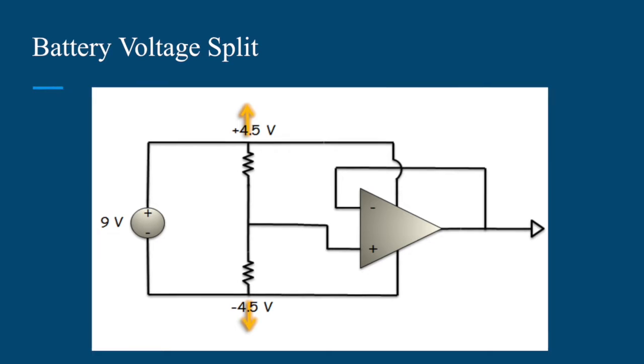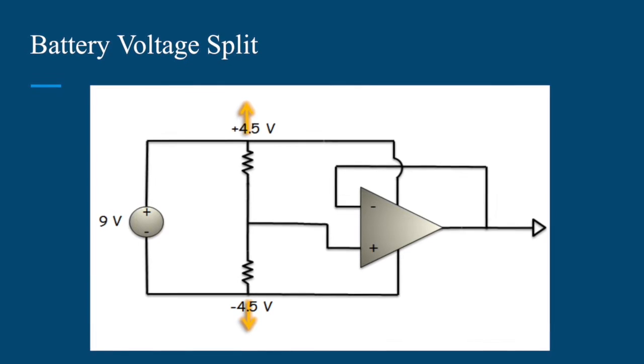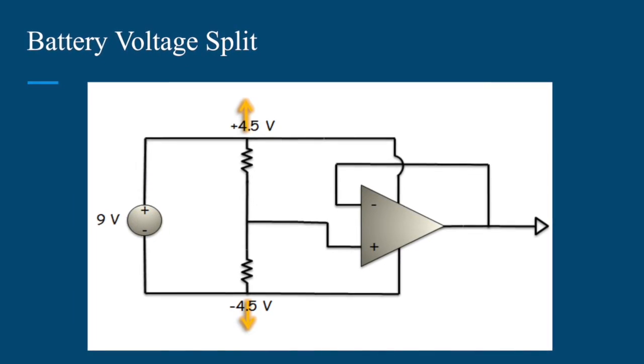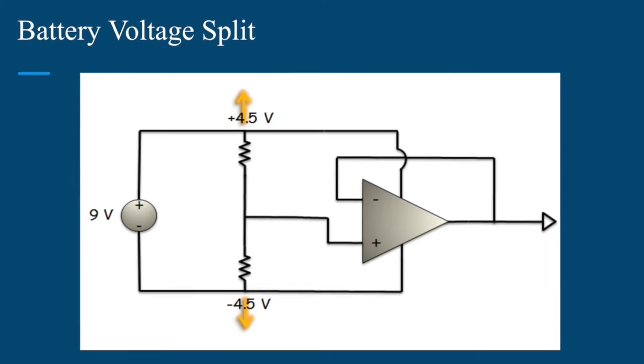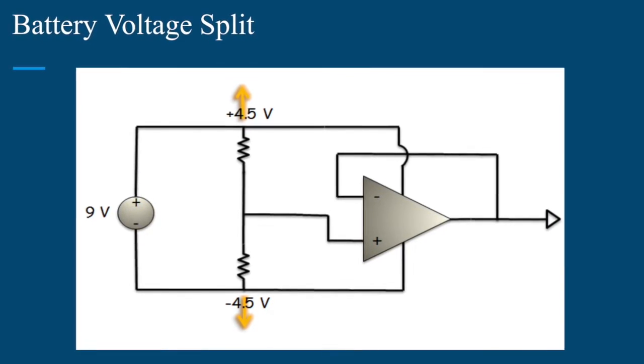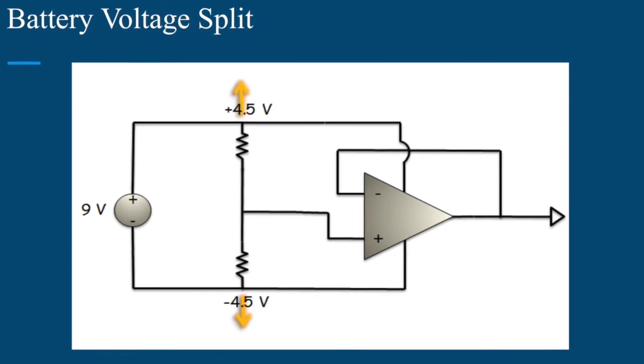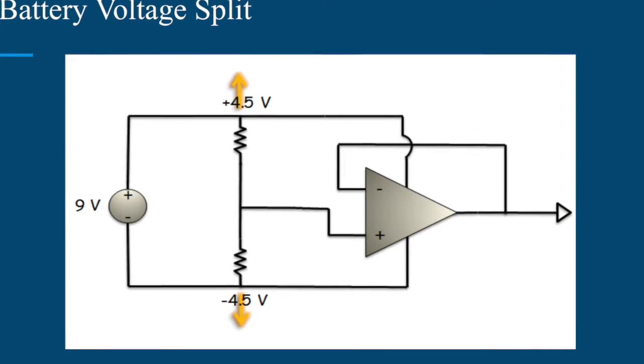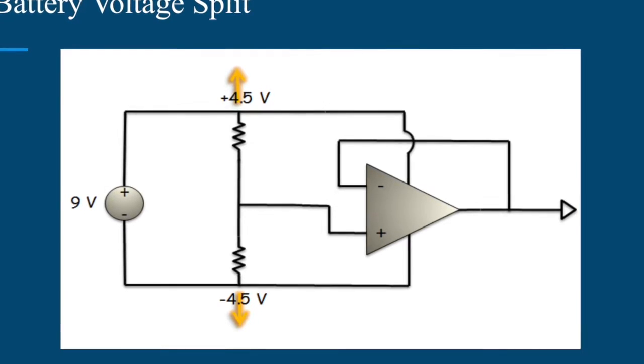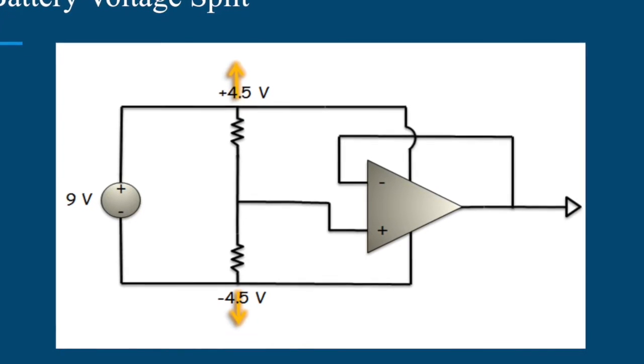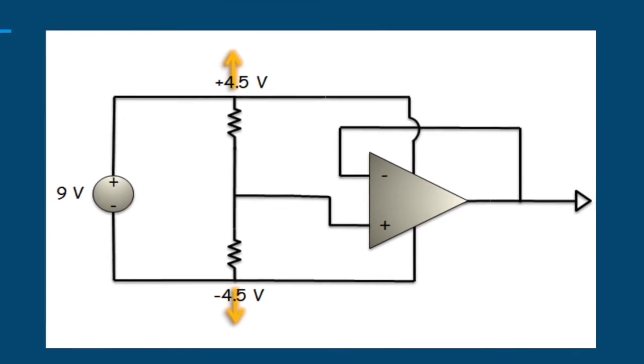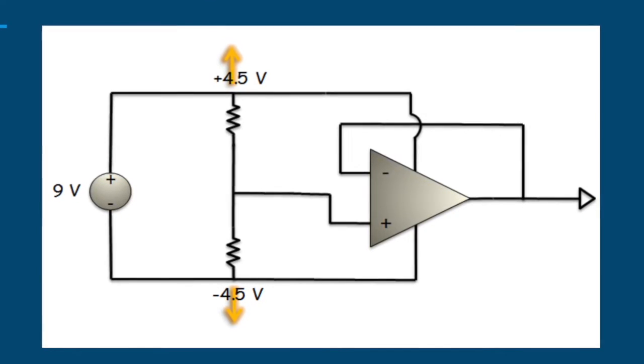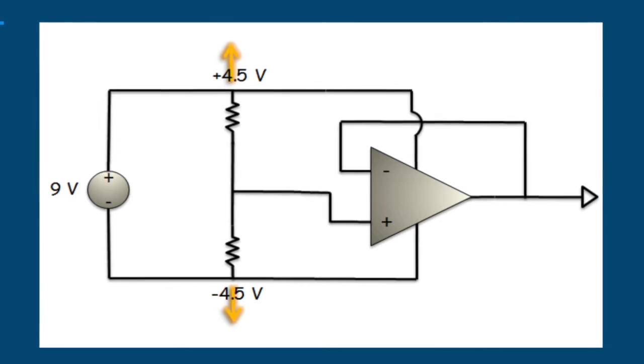This is the schematic representing our battery voltage split. Essentially the output of the op-amp is grounded which causes the negative input to also be grounded, and the voltage of the negative input and the positive input are equal. The positive input is connected to the central node and using equal resistors the voltage will split to positive 4.5 volts and negative 4.5 volts.